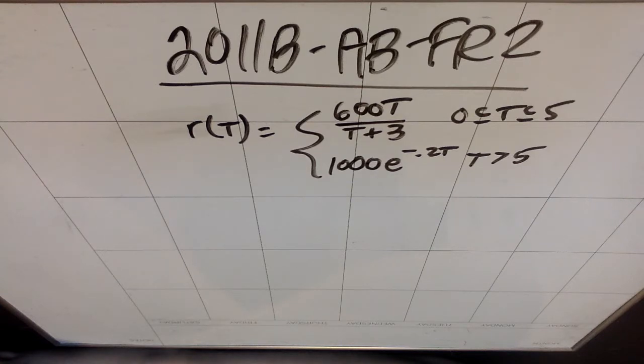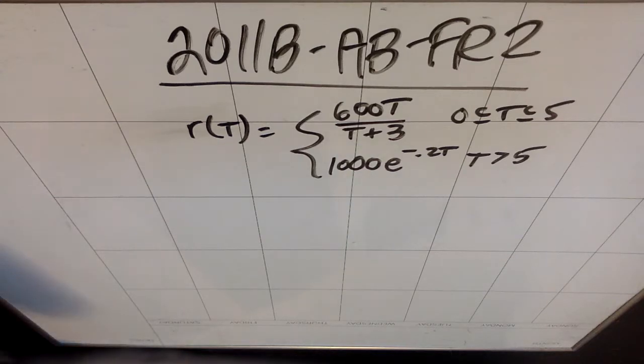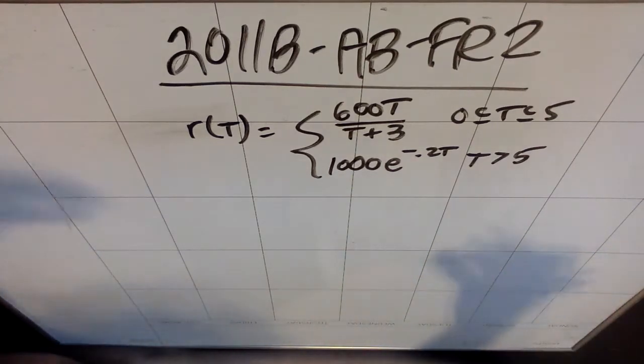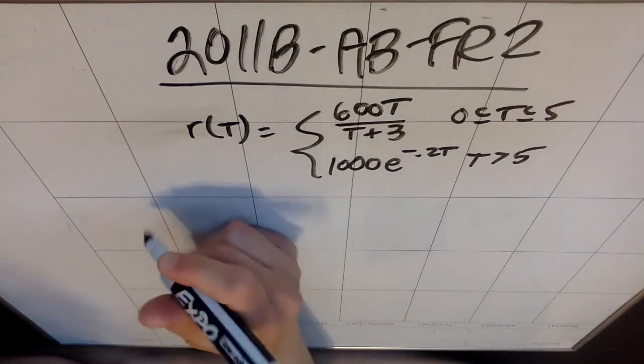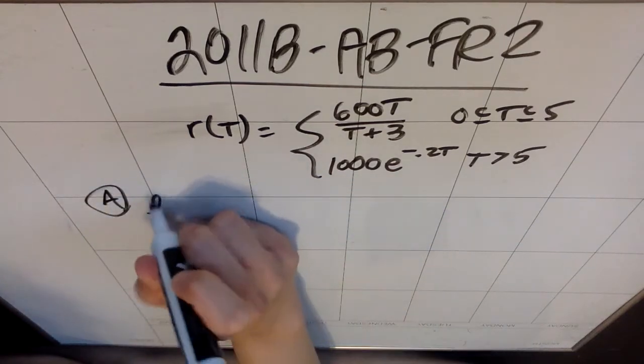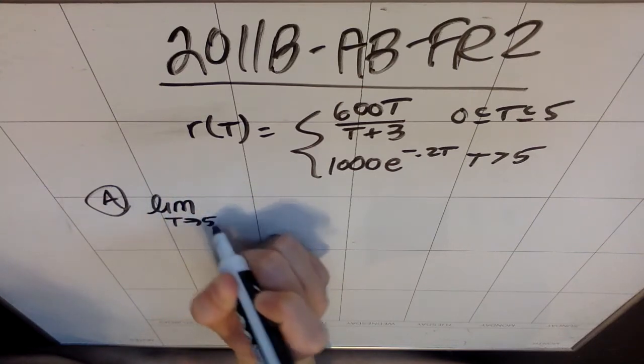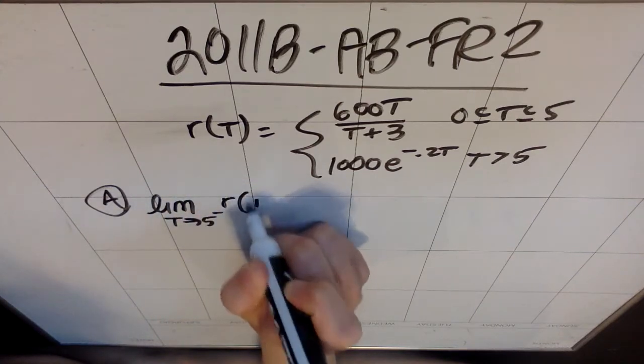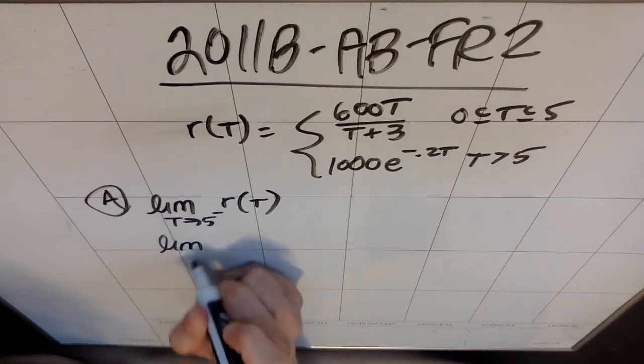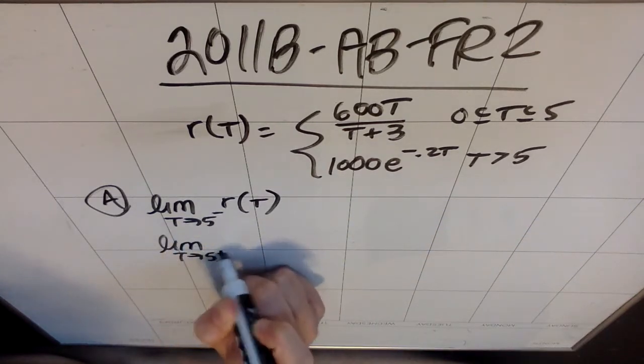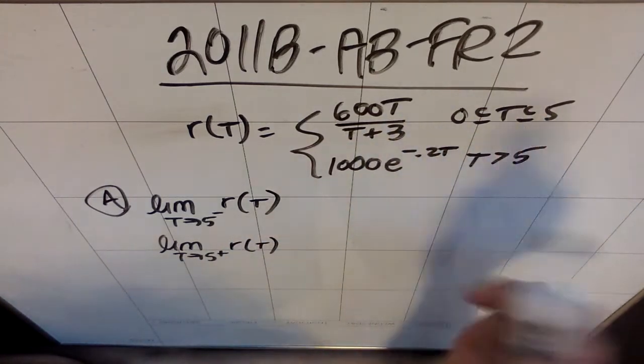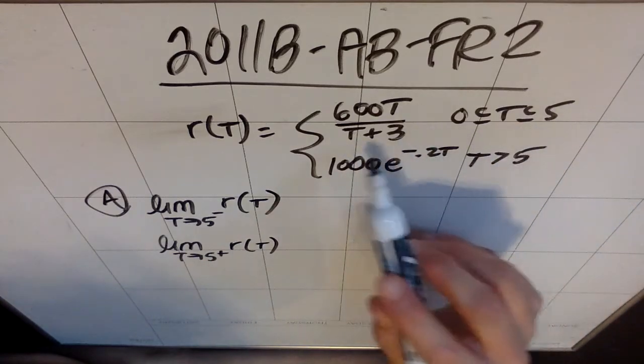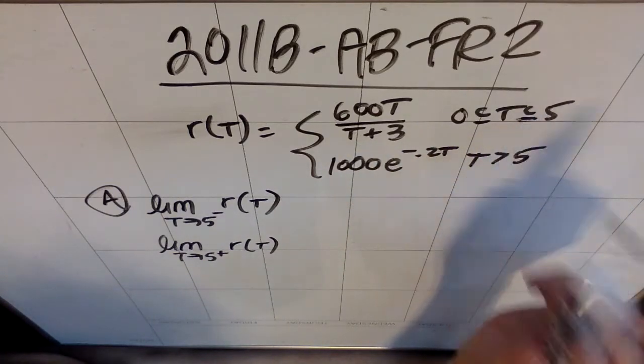Is R continuous at t equals five? Show the work that leads to your answer. There's a couple different ways I can do this. Essentially all I need to show is the limit definition of what continuity means, but then I can make my calculator find the actual value. In part a, what it means to be continuous is that the limit as t approaches five from the left of R of t would have to equal the limit as t approaches five from the right of R of t. Now it happens that the left-sided limit is also the value of the actual function here because of this equal to.